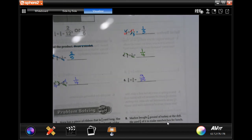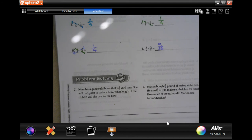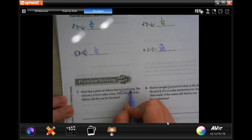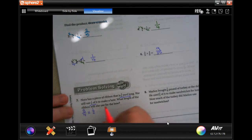So, we are going to go down, and we are going to do number 7. It says, Nora has a piece of ribbon that is 3 quarters yards long. She will use half of it to make a bow. So, 3 quarters by 1 half. And, 3 times 1 is 3, 4 times 2 is 8, so 3 eighths yard.